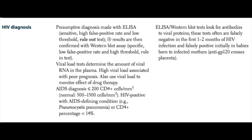Positive ELISA results are then confirmed with a Western blot assay. This is more specific, has a high false negative rate and a high threshold, so it is a rule-in test. We always do the ELISA first and then confirm with the Western blot, to avoid as many false positives and false negatives as possible.